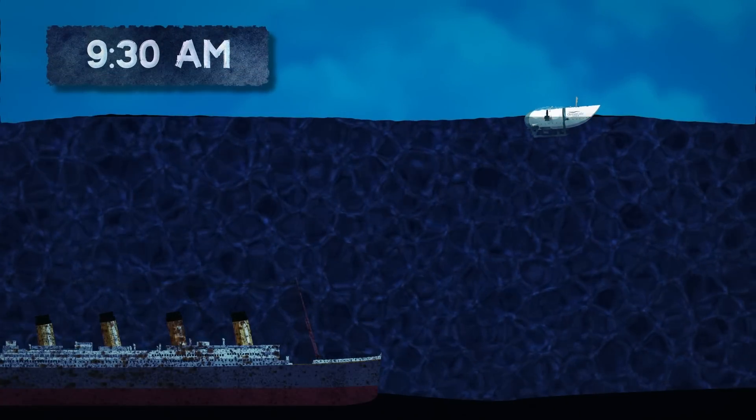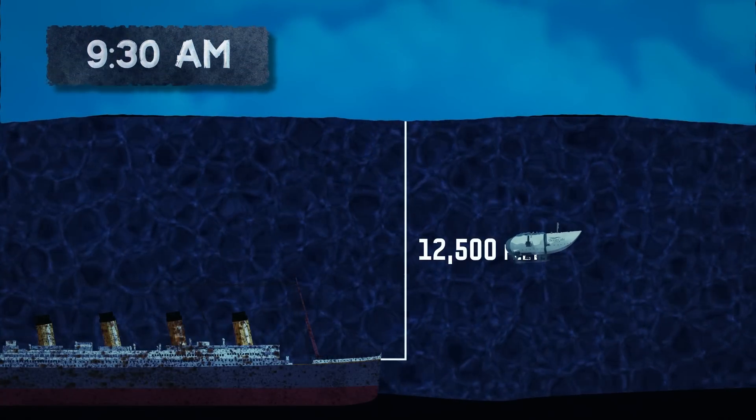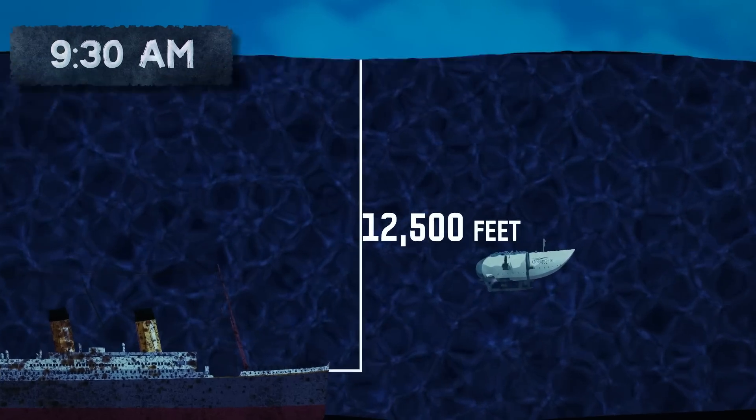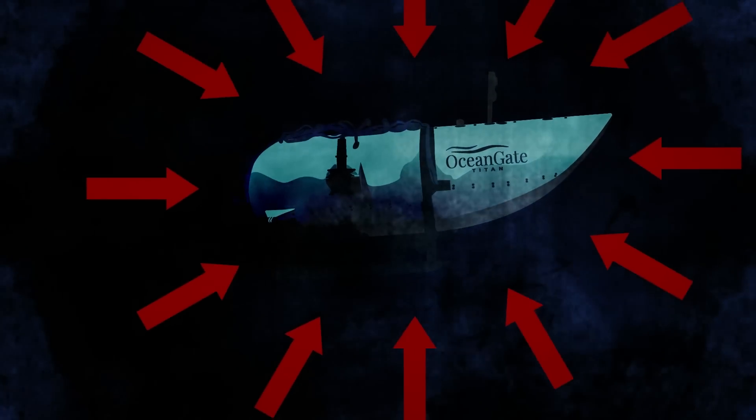We'll address the question of what happened first. Here's the order of events. At 9:30 am, the Titan submersible takes off from its base platform to the Titanic shipwreck site, 12,500 feet below the ocean's surface. The deeper it goes, the darker and colder it gets, and the more pressure the vessel is experiencing.